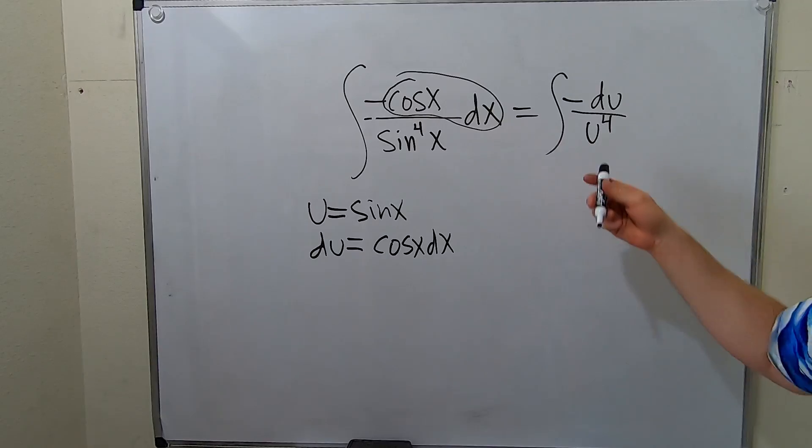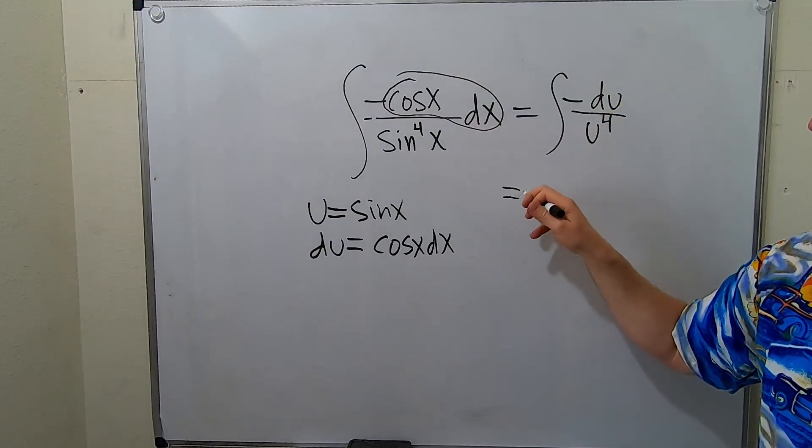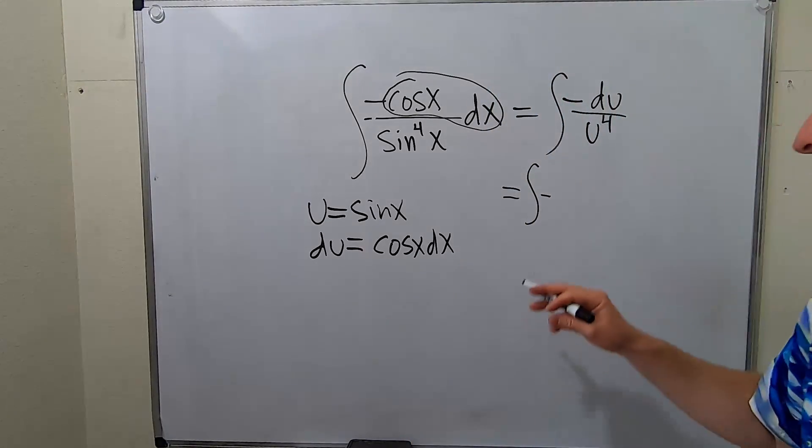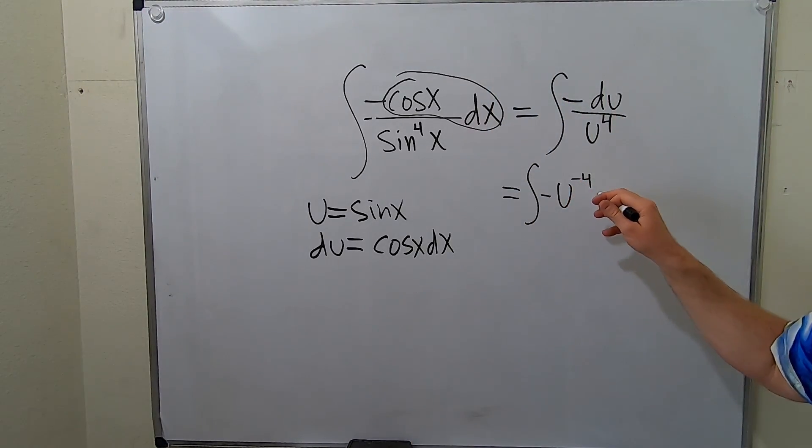So now we can bring this upstairs so we can use the power rule. When you bring this upstairs, the exponent will become negative. This will be u to the negative four du.